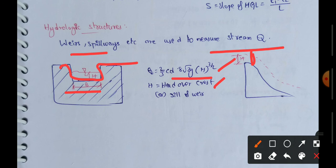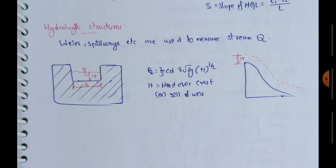Other methods include the electromagnetic method and the ultrasonic sound method, which use specialized equipment to measure stream velocity and discharge. That covers stream gauging. If you liked this video, please like and subscribe to the channel.